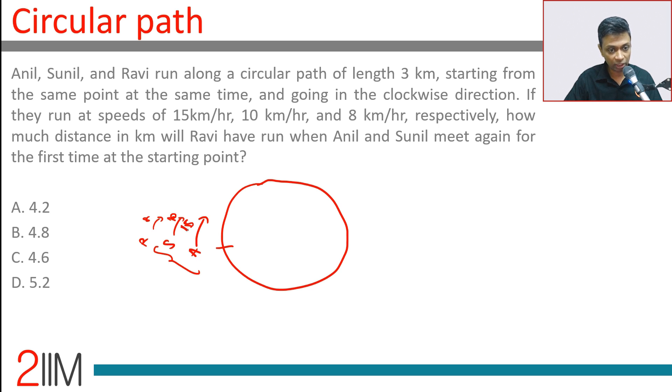So how long will it take Anil to reach the starting point and for Sunil to reach the starting point, and then we find the LCM of those two and then come back to Ravi later on. So 3 kilometer track.